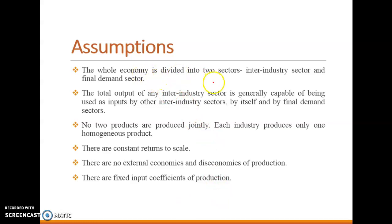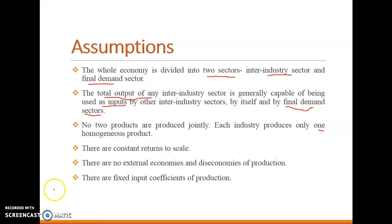Under this model the economy is divided into two sectors: the inter-industry sector and the final demand sector. The model says that the total output of any industry is generally capable of being used as input by another industry sector, and the rest is consumed by the final demand sector — which includes external bodies like government and consumers. This model also assumes that no two products are produced jointly, meaning each industry produces only one homogeneous product at a time. There are also constant returns to scale, meaning if inputs increase, output increases by the same proportion.